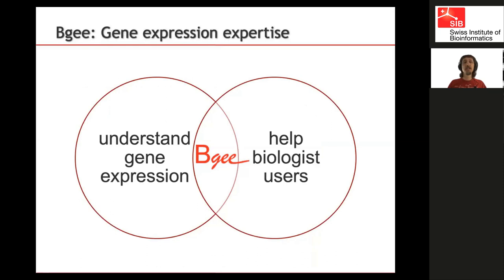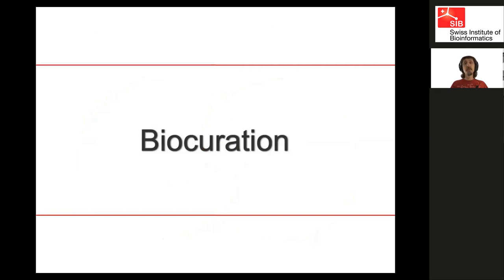So what is BG? It's a database of gene expression. Our aim is to understand gene expression and help biologist users. We try to really be at the interface of these two missions — to make gene expression data useful to people. For this, we work both on improving the data and on making tools which make it useful. I'm going to go through a number of concepts which are important to BG and to databases to understand what we have and how we do it.